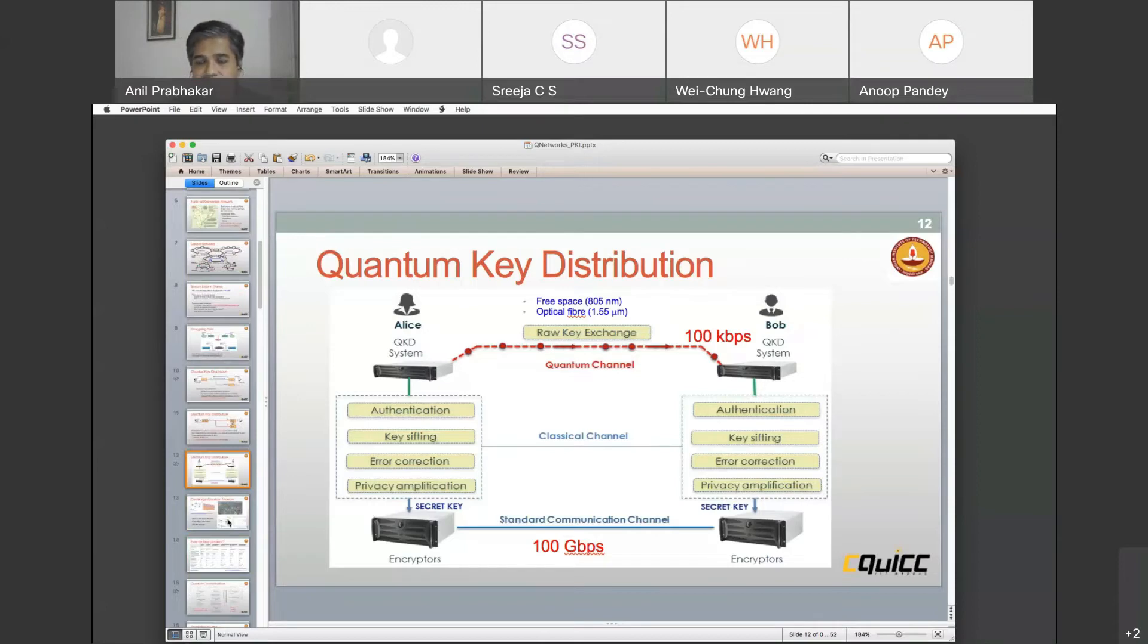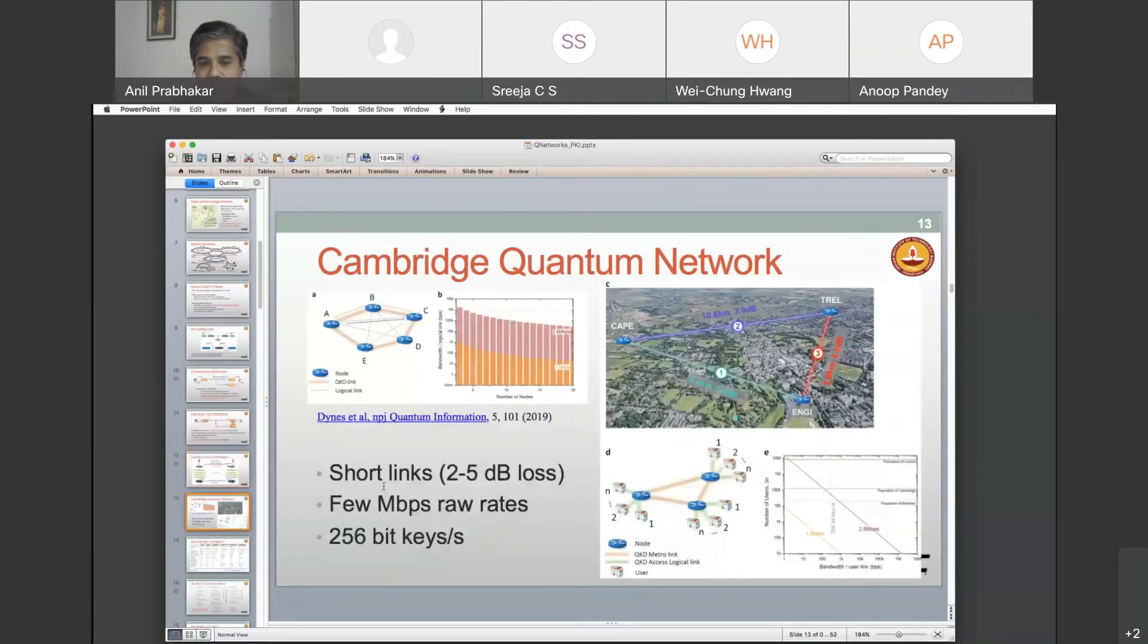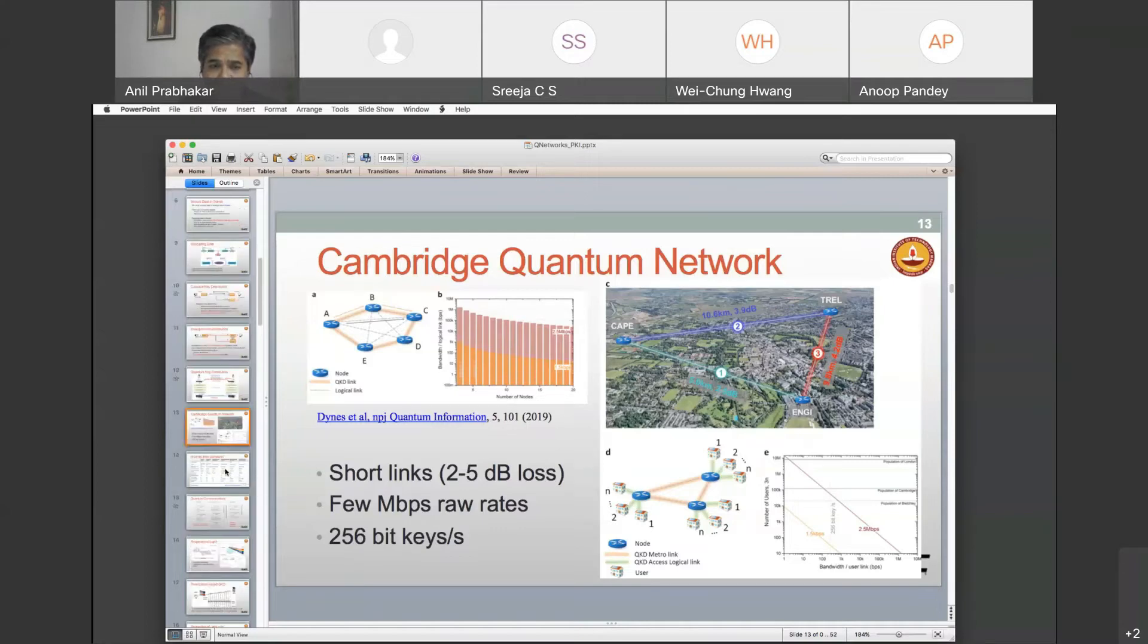It's always good to know what the rest of the world is doing. Here's a picture from a couple of years ago of what is being done in Cambridge in the UK. They are doing the metro parts of it where they're looking at short distances. This is about 10 kilometers between these two points, Cape and Trill. They have about 2 to 5 decibels of loss between the nodes. They get a key rate of about 256 bit keys per second. Just think about this. We think 256 bit keys per second is low. But actually 256 bits is really sufficient if you're changing your password every second. So there are ways to do this today.